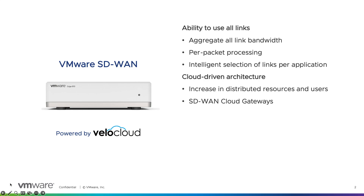We viewed that the cloud was the future. So it wasn't the mentality of just wanting to have the ability to use a second link — which happened to be internet — to increase the throughput and availability of my traffic from an office to a data center. The VMware SD-WAN product does do that, but the founders of VeloCloud viewed it as everyone is going to the cloud, so how do we develop the product and solution to help satisfy that requirement?